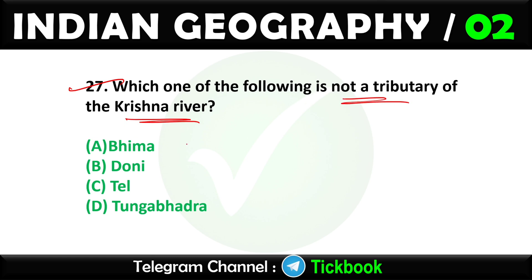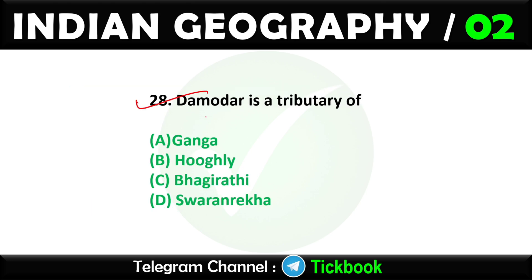Question twenty-seven: Which one of the following is not a tributary of the Krishna river? Option number B: Dhani is not a tributary of Krishna river, whereas Bhima, Tungabhadra, and Ken are tributaries of Krishna.